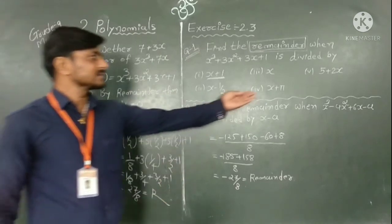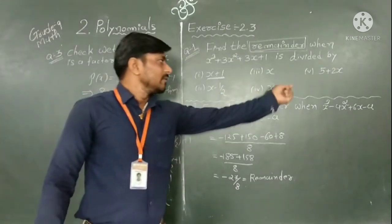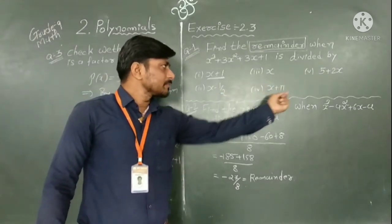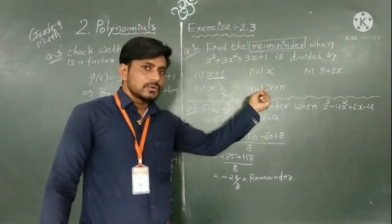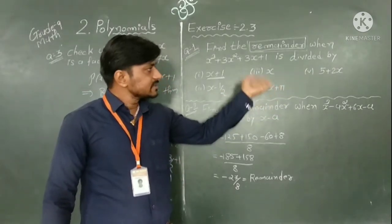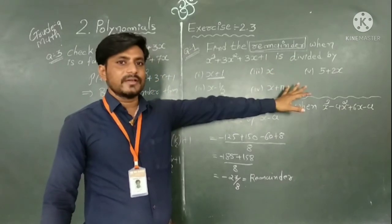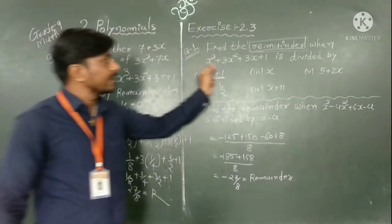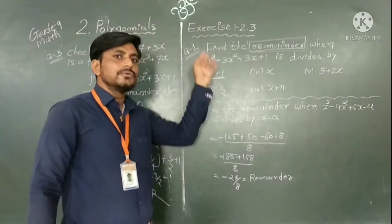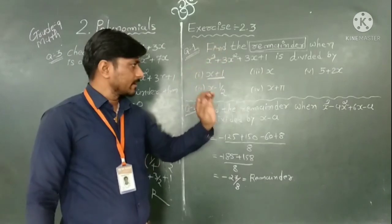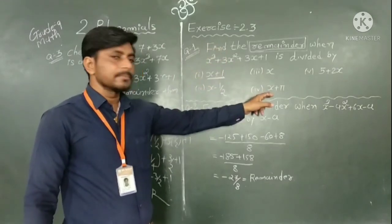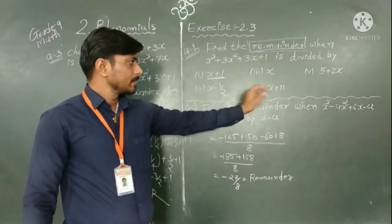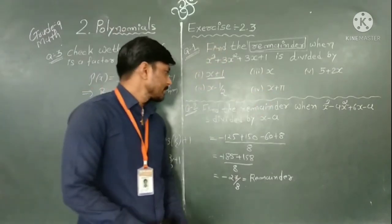At last, for x plus 5 equal to 0, x equals minus 5. Put x equal to minus 5 in this polynomial and you get our remainder. That is up to you to complete.